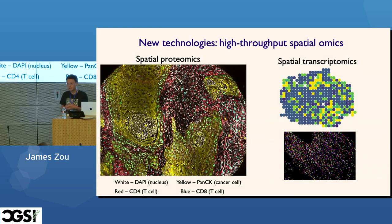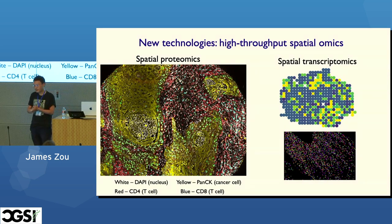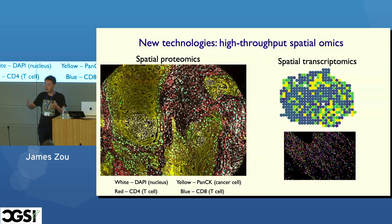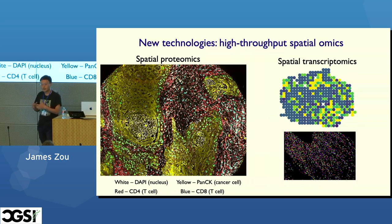There have been quite exciting developments in new technologies for spatial omics over the last two or three years. For example, we now have spatial proteomics, where you can take tissues from patients and do multiplex imaging for 50, 100, or more different antibodies in parallel to measure the abundances of 100 different proteins. In parallel, there are also technologies around spatial transcriptomics, where instead of measuring protein abundances, you can measure abundances of different genes — hundreds or sometimes thousands of genes.